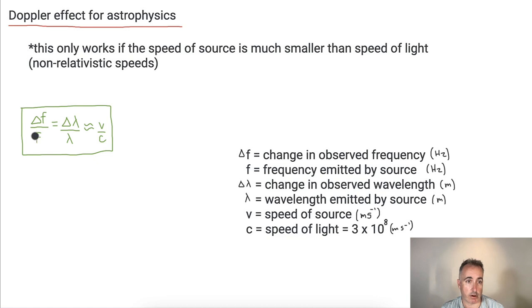F is just the emitted frequency by the source. So it's like the actual light that the star is sending off. Same kind of thing for the wavelength. So change in observed wavelength divided by the emitted wavelength because it's roughly equal to the speed divided by C.